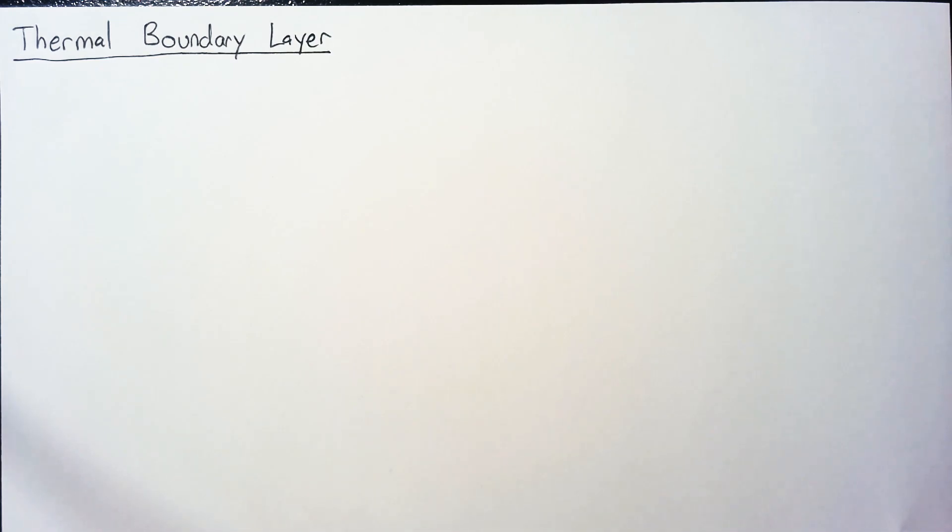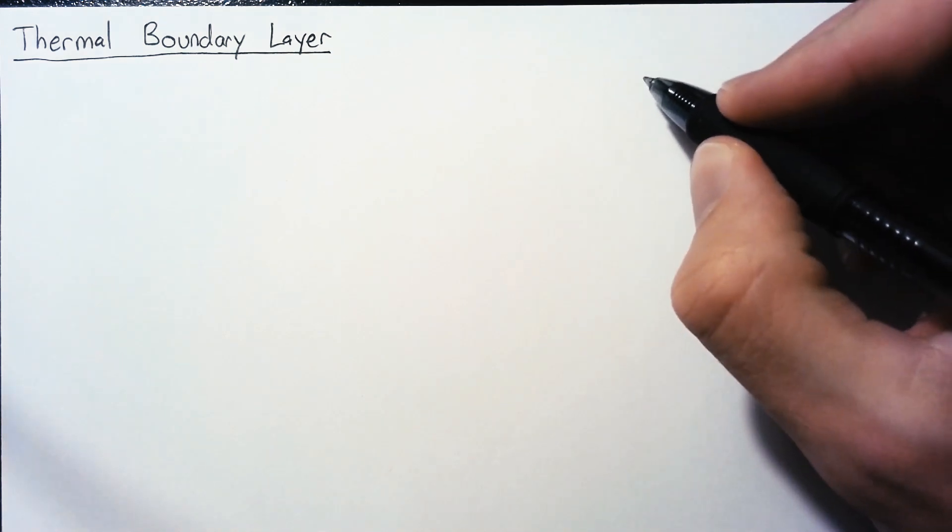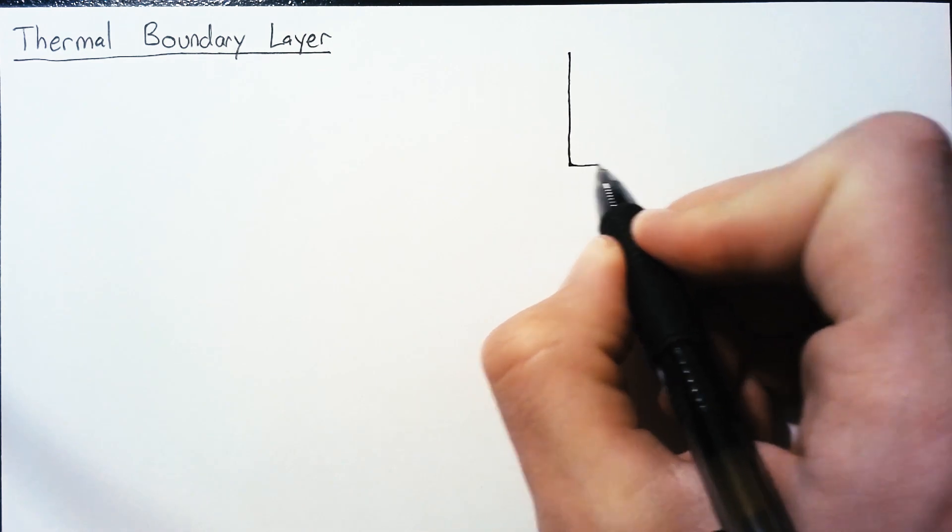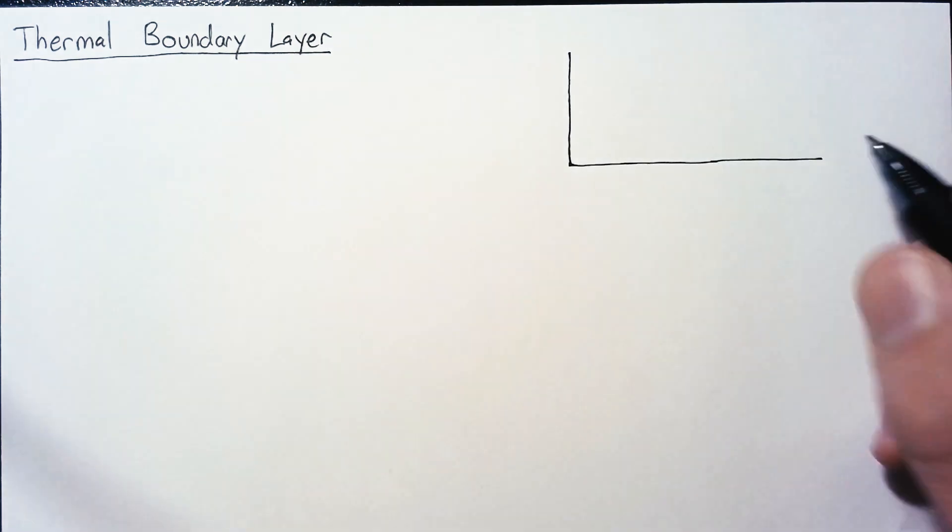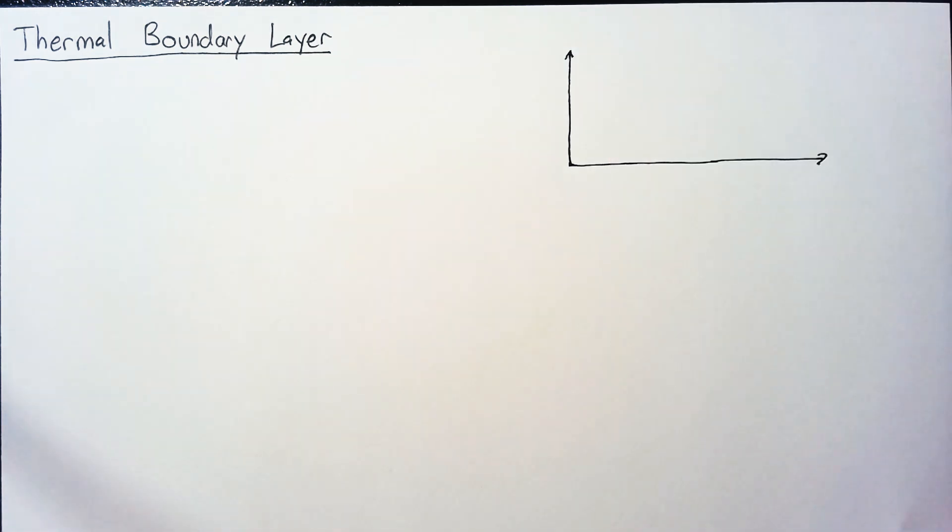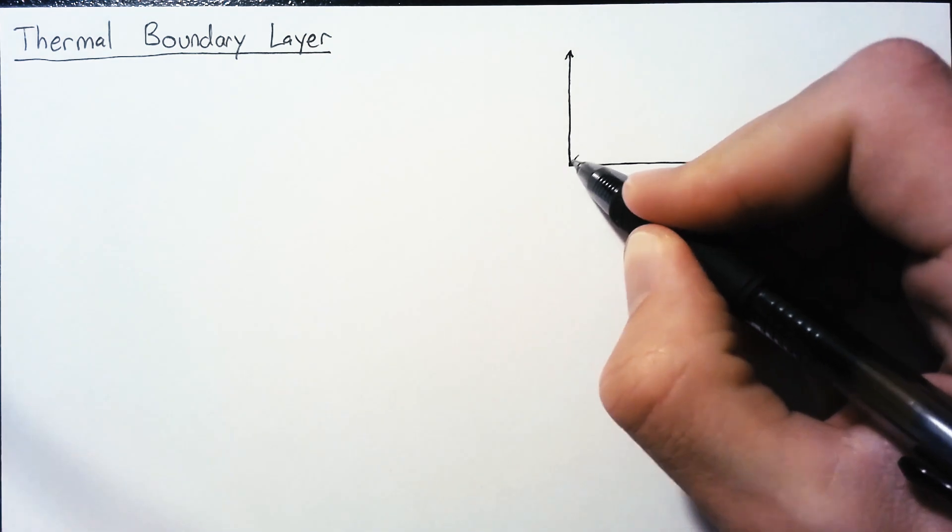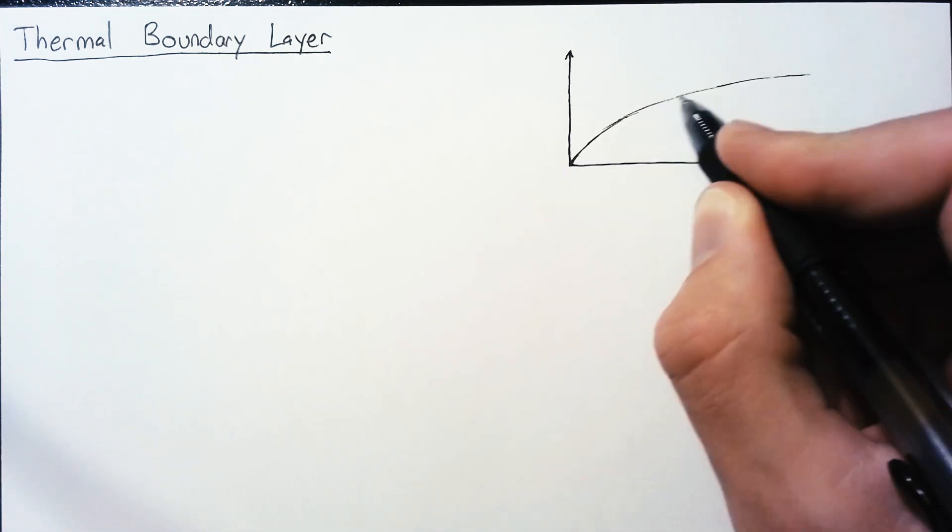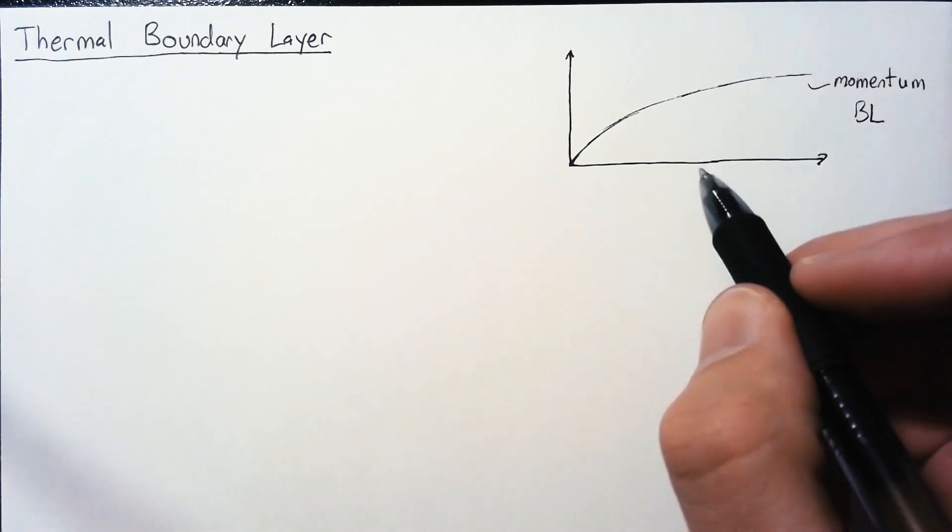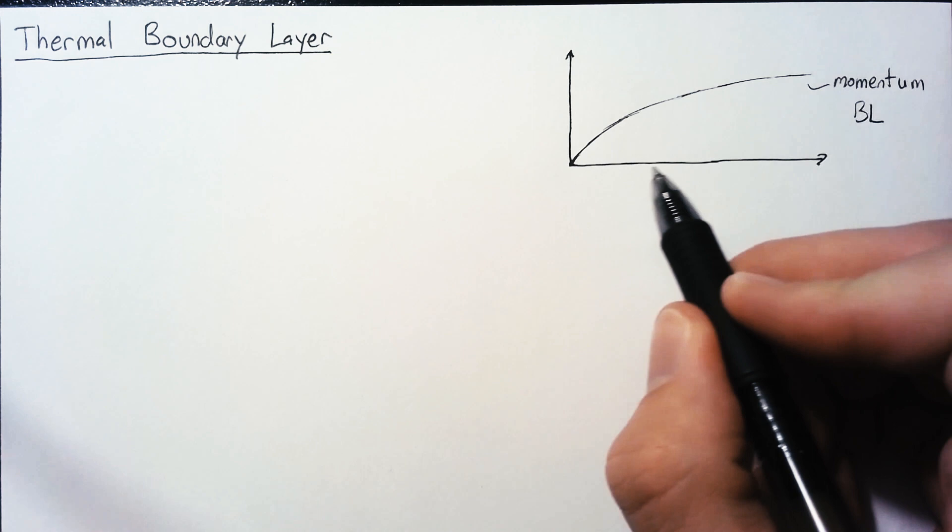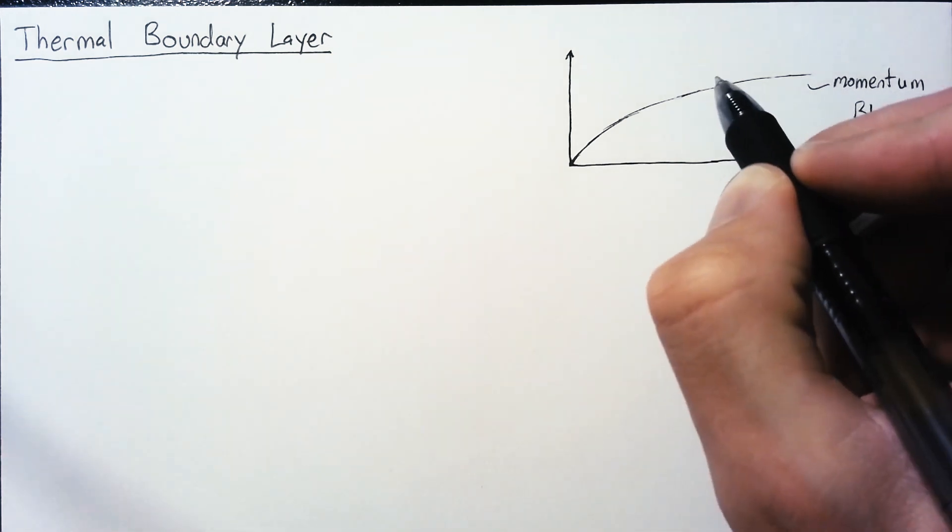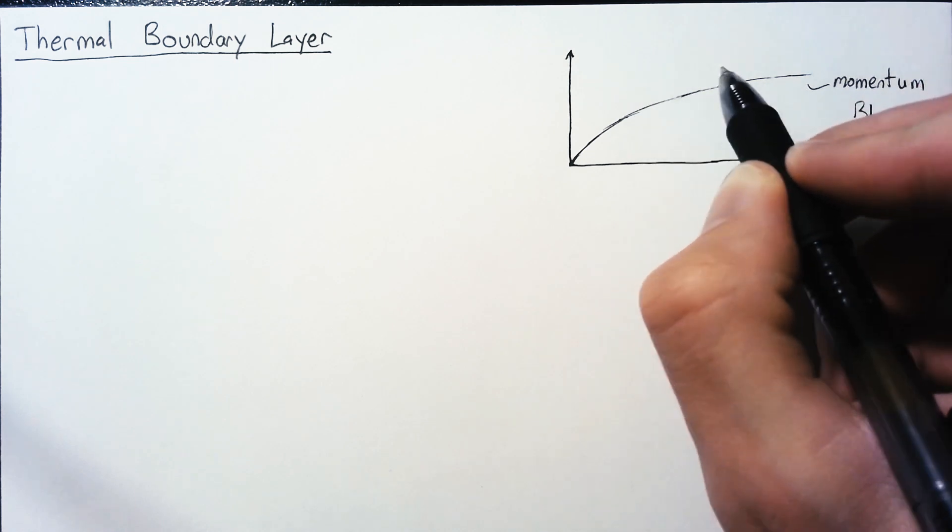The thermal boundary layer is the same thing as the momentum boundary layer from fluids. The difference is we are seeing how temperature changes for flow over a flat plate instead of momentum. The momentum boundary layer looks something like the square root for a flat plate. The momentum boundary layer shows how far away from the wall you need to be in order for the local velocity to equal the undisturbed velocity.